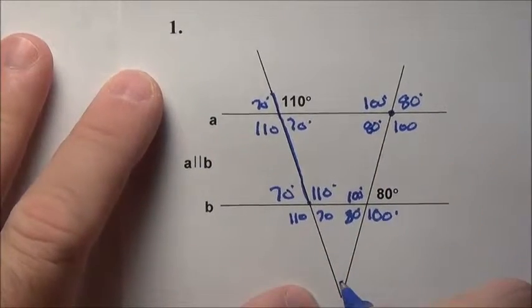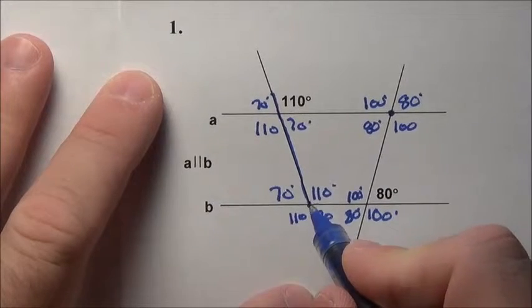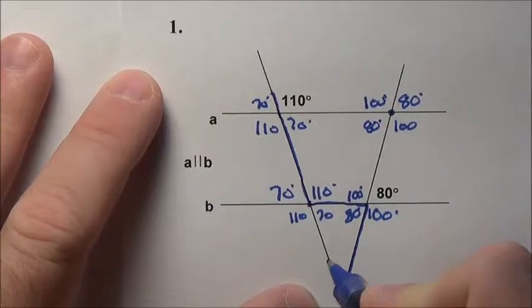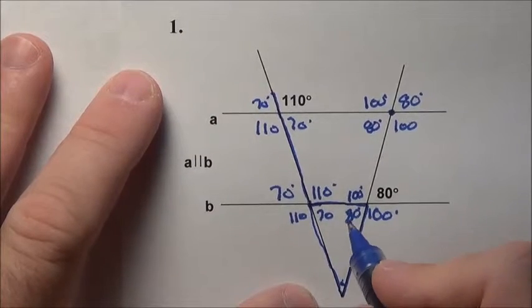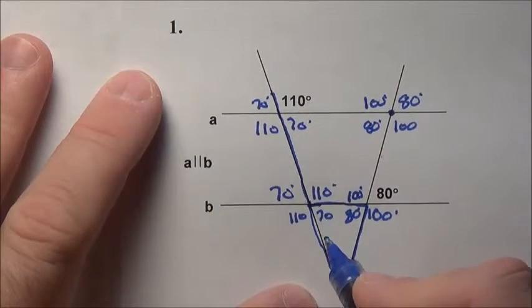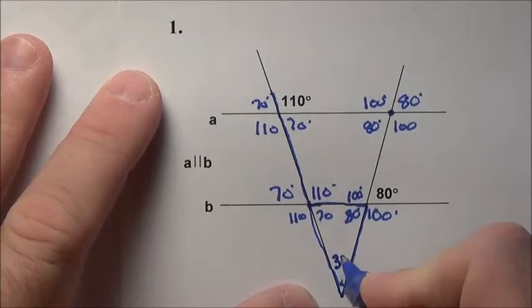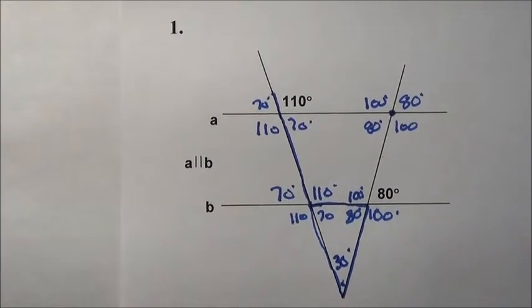So we have all that. Now we have to get this guy right down in here. Well, notice we have a triangle. In all triangles, the sum of the angles has to be 180 degrees, so 80 plus 70 is 150. That makes this corner down here have to be 30 degrees.